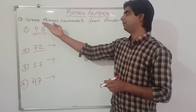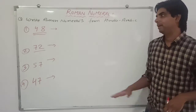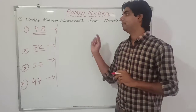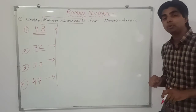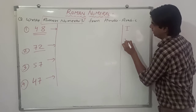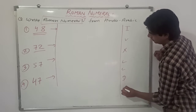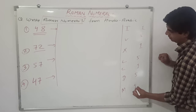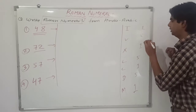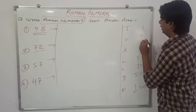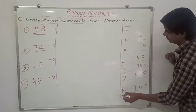Let's take some examples. We have to write Roman numerals from Hindu Arabic numbers. First, we have to make a chart. The symbols we have learned are I, V, X, L, C, D, M. Then write 1, 5, 1, 5, 1, 5 alternately. For the next two digits write one zero, for the next two digits write two zeros. This is how you can learn the table.